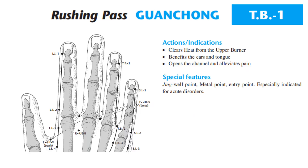For the action and indication: TB1 clears heat from the upper burner, benefits the ears and tongue, opens the channel and alleviates pain. Special features: TB1 is a jingwell point, metal point, and three-point, specially indicated for acute disorders.